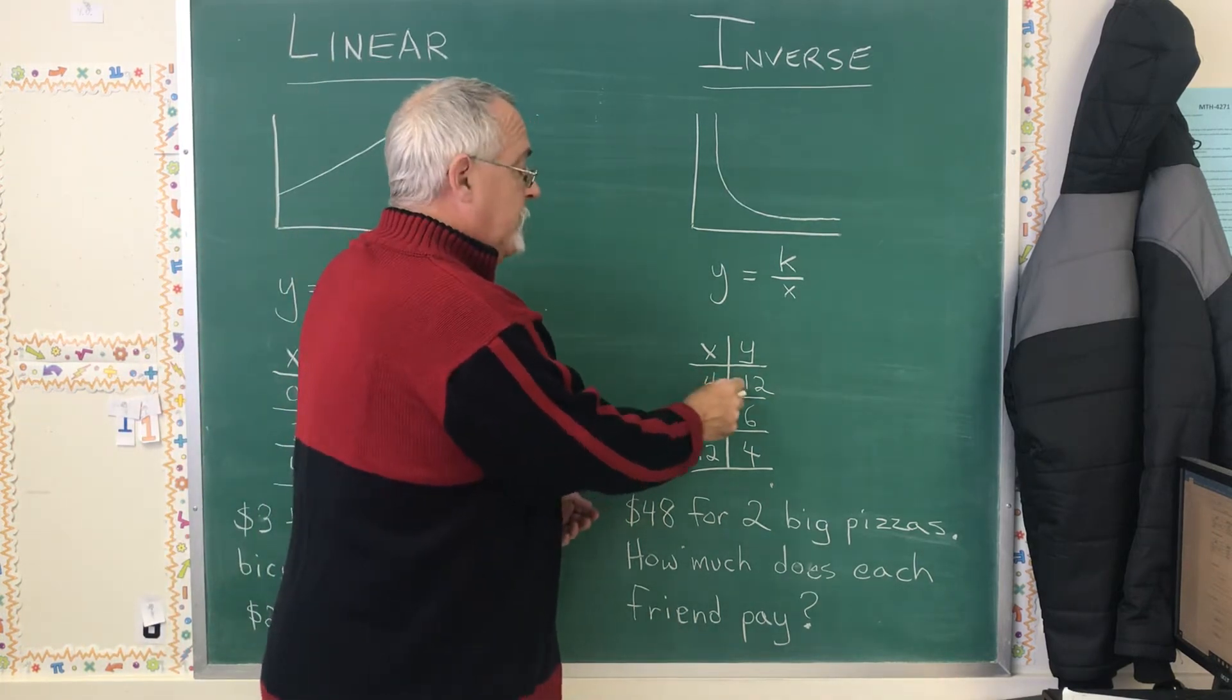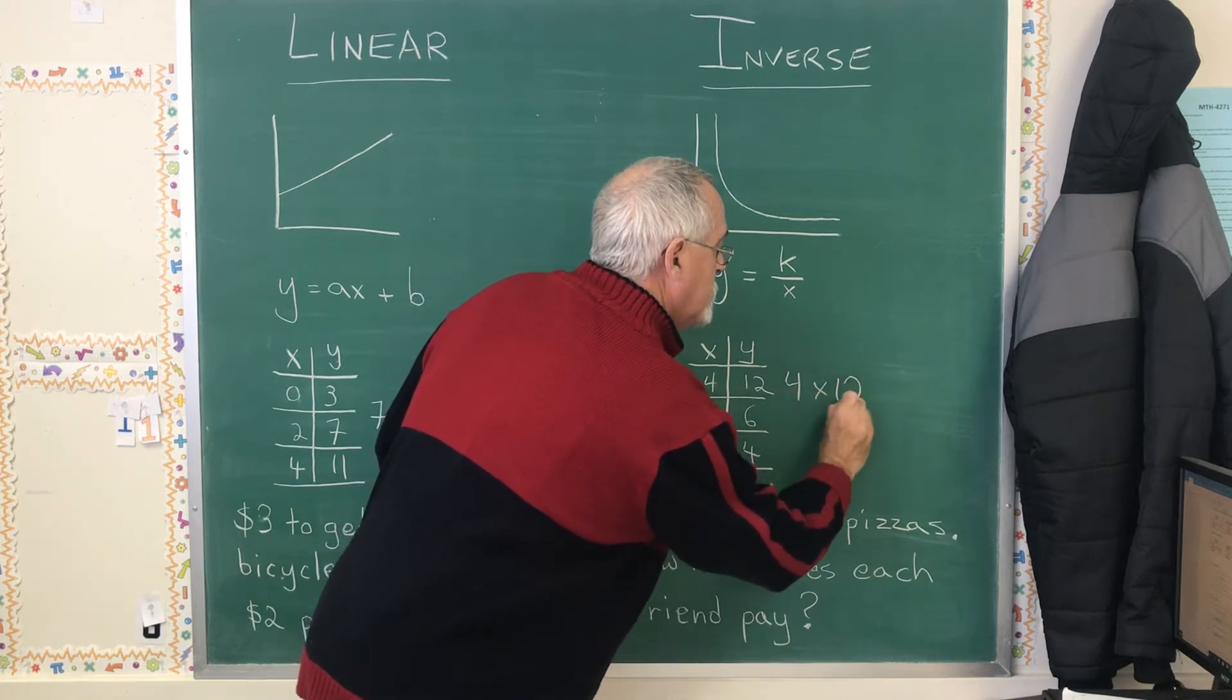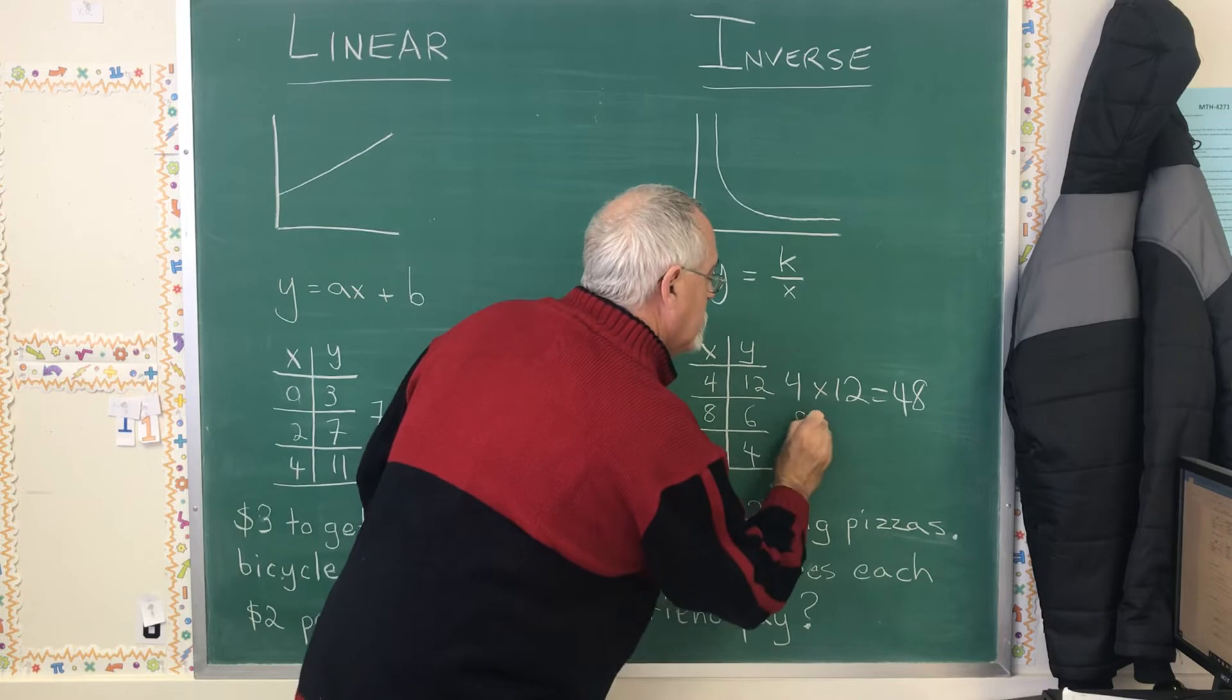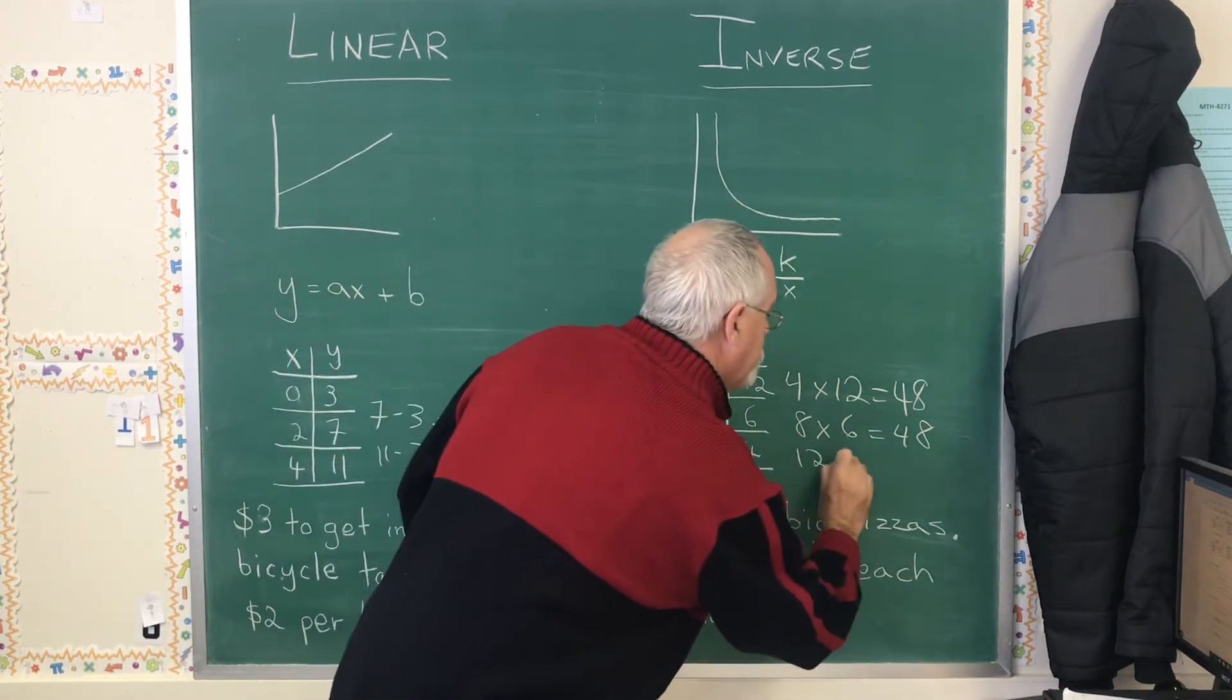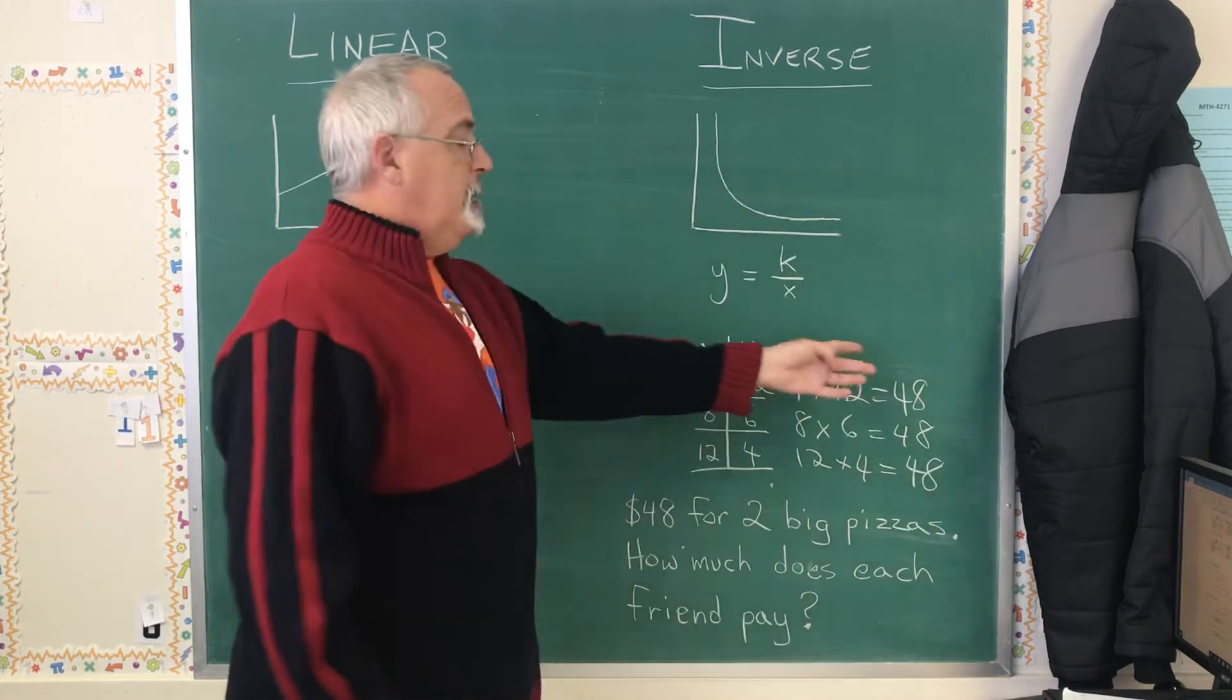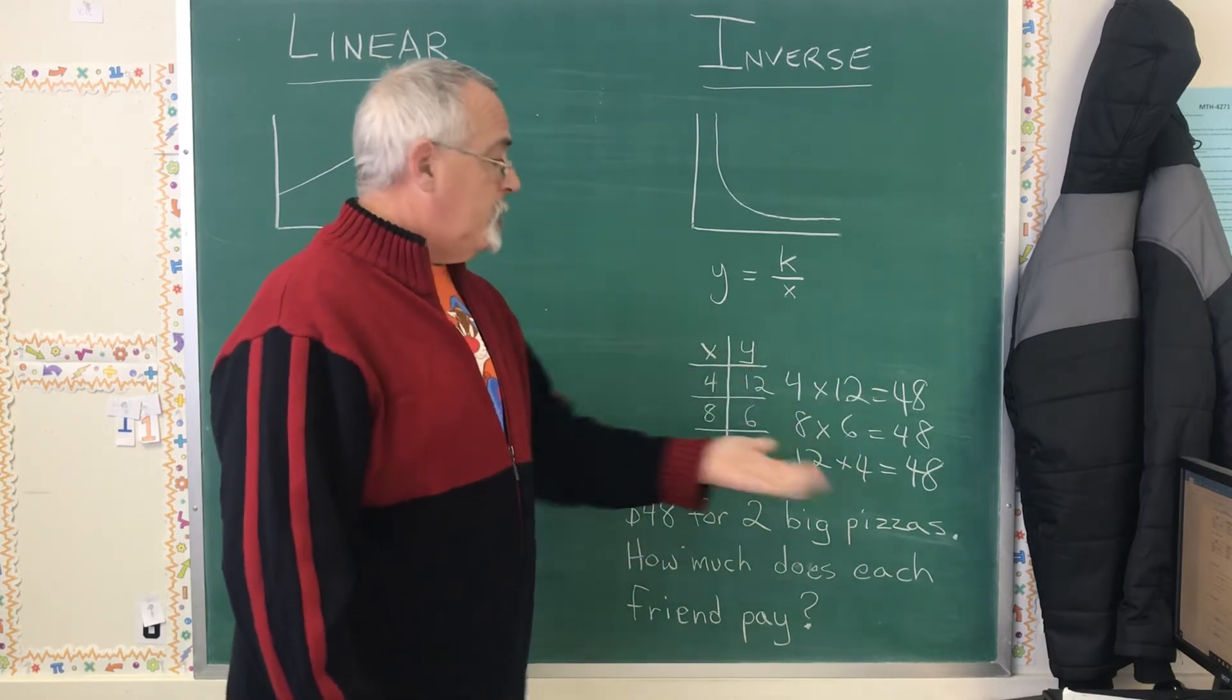That involves multiplying my x's by my y's. 4 times 12 is 48. 8 times 6 equals 48. 12 times 4 equals 48.